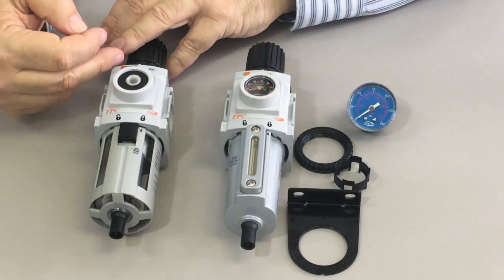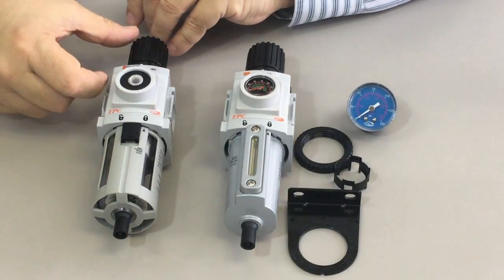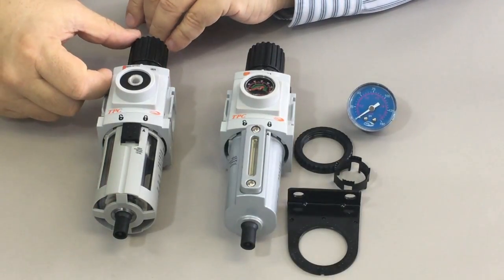It's called a piggyback because, as you can see, the bottom portion is the filter, the top portion, the regulator piggybacking on top of it.